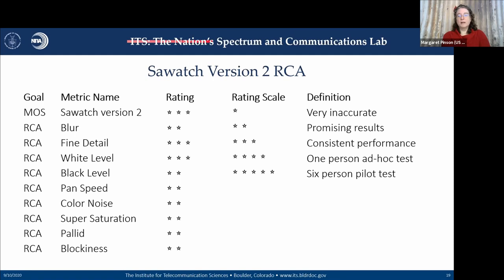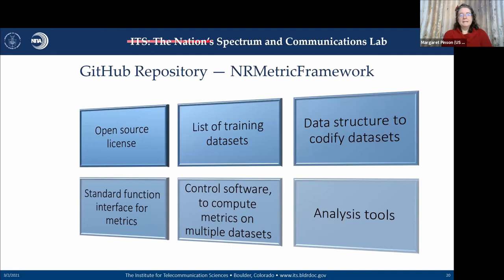In addition to the SAWACH metric, I've put out all the tools I've developed for this line of research, all under open source licensing. There's a list of freely available training datasets suitable for this metric development, structures and standard interfaces to help work with these datasets and develop and apply metrics, control software for computing metrics, and analysis tools to look at performance — those analysis tools created the scatter plots shown earlier. All these tools that a new researcher needs to get started are available in our metric framework GitHub repository.